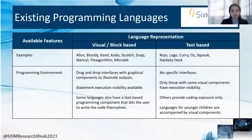These observations were gathered from analyzing existing introductory programming languages, where we identified two main language representations: the visual or block-based representation, including languages such as Alice, Scratch and Microbit, and text-based languages such as Fojo, Loco and Oz.